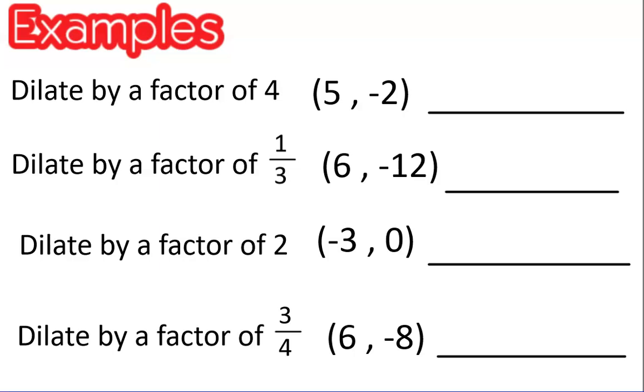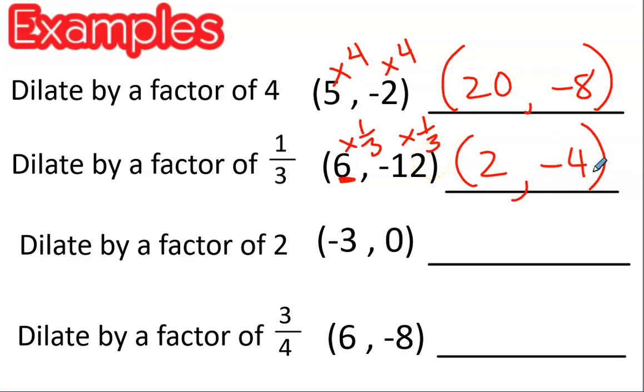Remember, to dilate, you simply multiply both coordinates by your factor. So let me do a couple for you. That's called showing your work. Remember, to multiply by a fraction means you multiply this number here by the whole number by the numerator. 6 times 1 is 6, and then you divide that answer by 3. So 6 times 1 is 6, and 6 divided by 3 is 2. Negative 12 times 1/3 is negative 4.